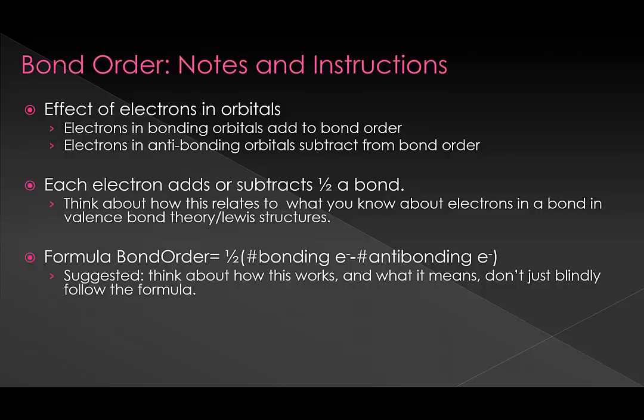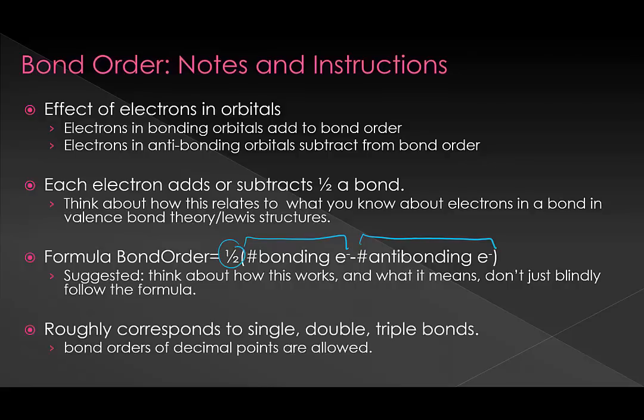We can put this into a formula, although don't think of it as an equation so much as just a way of figuring out what we just talked about quickly. Where we have our bonding electrons subtract our antibonding electrons and then multiply by one half to get our bond order. This roughly corresponds to single, double, or triple bonds, but we can have bond orders of decimal points allowed. In this class, you'll generally just see bond orders of integers or one half integers because we're keeping our MO diagrams pretty simple, but that can change based on more complicated MO diagrams.